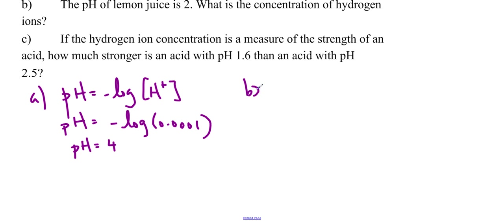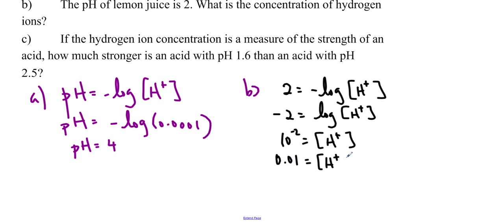Part b, the pH of lemon juice is 2. What is the concentration of hydrogen ions? So now we'll have 2 is equal to negative log H. And we can rearrange this. So we get negative 2 equals log H hydrogen ion concentration. And then we can change to the exponential form. So 10 to the negative 2 is equal to the hydrogen ion concentration. Or I guess we could write 0.01.